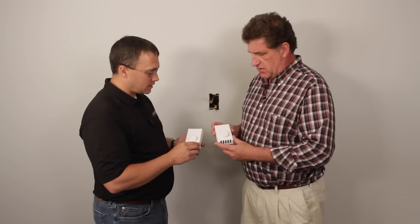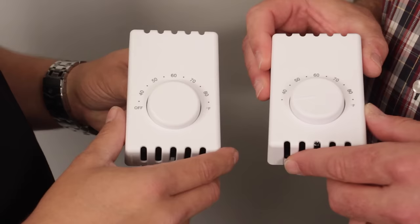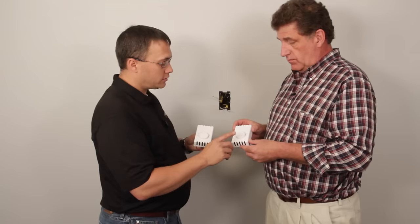With thermostats, this is a double pole. This is a T410B. That is a T410A. So the double pole has a true off feature where the single pole thermostat does not.